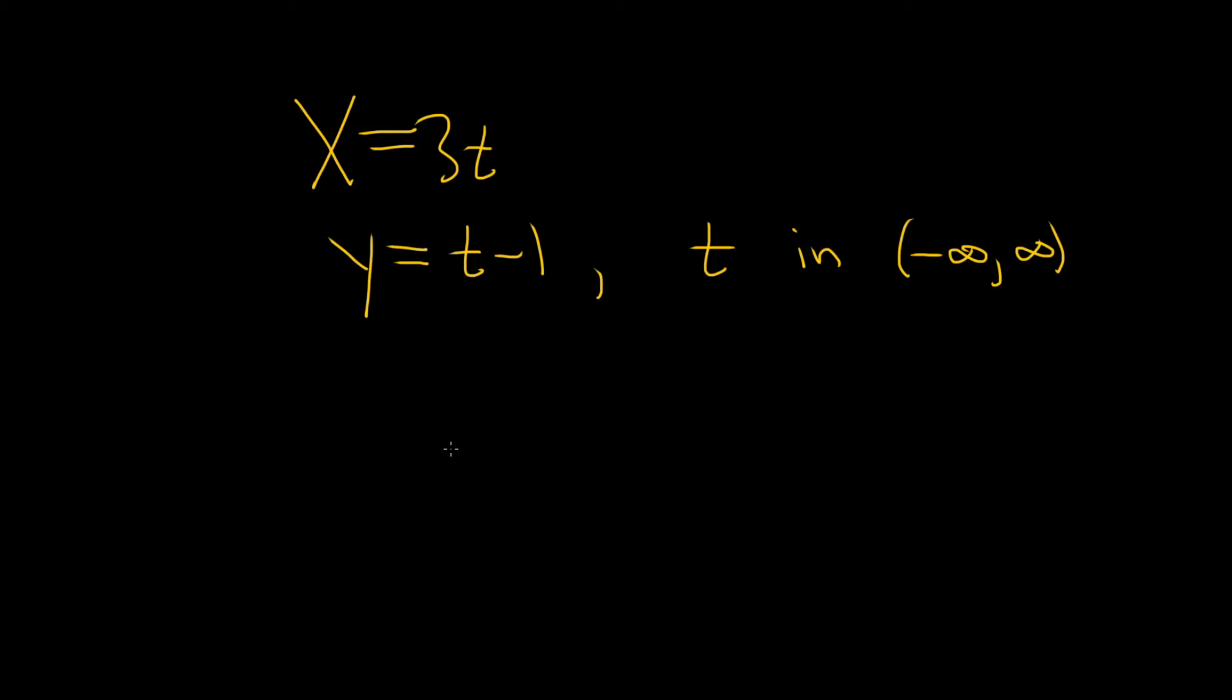To find a rectangular equation, we have to eliminate the t's. One way to do it in this problem would be to take this first equation and solve it for t, and then plug it into the second one.